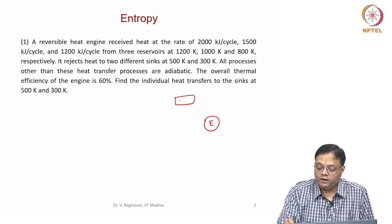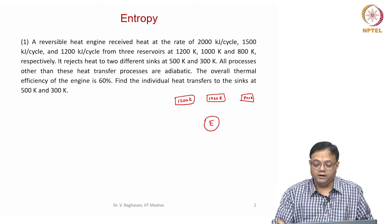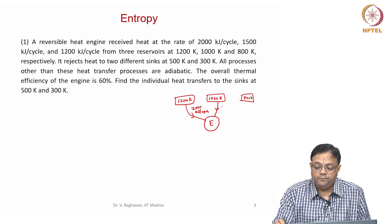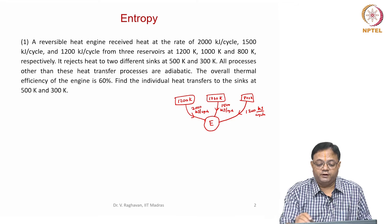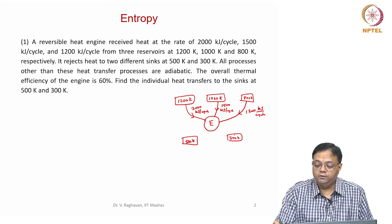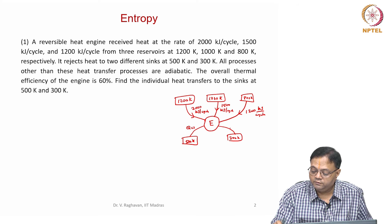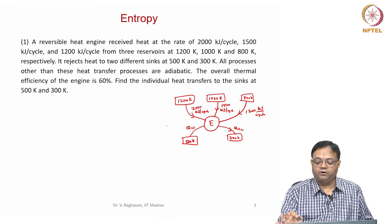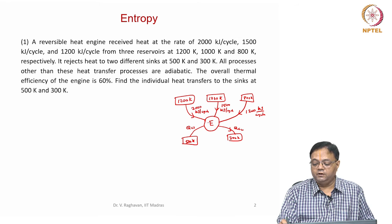There are three reservoirs: one at 1200 Kelvin, another at 1000 Kelvin, and another at 800 Kelvin. This gives 2000 kilojoules per cycle and 1200 kilojoules per cycle. It rejects heat to two different sinks: one at 500 Kelvin and another at 300 Kelvin. Let us call these Q_C1 and Q_C2. All processes other than these heat transfers are adiabatic, meaning there is no other heat transfer in the engine with any other device.